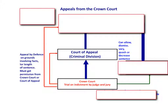The Court of Appeal Criminal Division can allow the appeal, which means approve it. They can dismiss it, which means strike it down or get rid of it. They can vary the decision of the Crown Court, so change it in some way — for example, changing the length of the sentence. They can quash a sentence, in other words get rid of it altogether or decrease a sentence. What they cannot do is increase a sentence passed by the Crown Court.